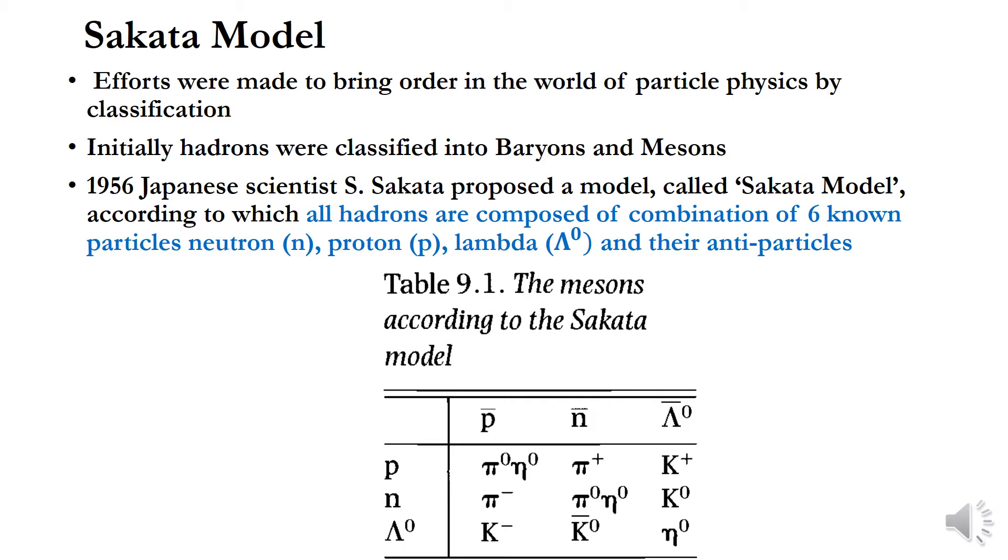There were many scientists who tried to bring different types of order by different classification. One of the prominent of these efforts was by the Japanese scientist S. Sakata in 1956 who proposed a model known as Sakata model.